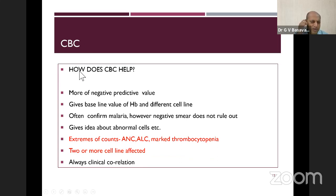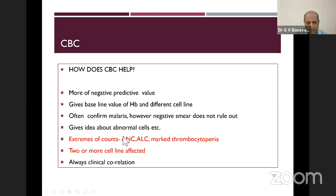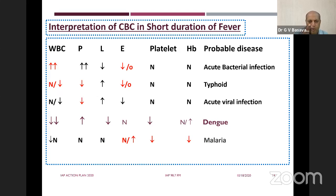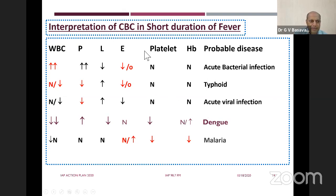Does CBC help? The answer is — to some extent it has more negative predictive value. It can rule out diseases rather than diagnose them. If the total leukocyte count is more than 15,000, polymorphs more than 10,000, or there is marked thrombocytopenia, that can help. If two or more cell lines are affected, it will be useful. How to interpret CBC in short-duration fever: leukocytosis with polymorphs — think bacterial infection; leukopenia with lymphopenia — consider viral infection; normal WBC with decreased polymorphs and predominance of lymphocytes — viral infection. Leukopenia with thrombocytopenia — consider dengue.